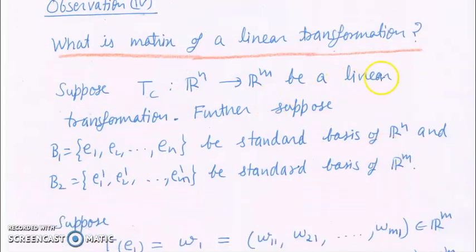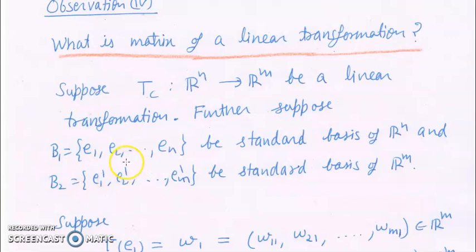Suppose TC from Rn to Rm is a linear transformation. Let B1 = {e1, e2, ..., en} be the standard basis of Rn, and B2 = {e1', e2', ..., em'} be the standard basis of Rm. Here ei denotes an n-tuple whose ith entry is 1 and all other entries are 0, and ei' denotes an m-tuple whose ith entry is 1 and all other entries are 0. These are ordered bases.